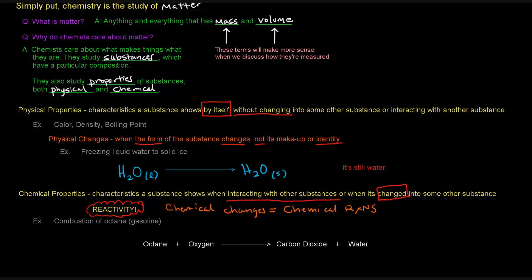But octane has a certain level of reactivity with oxygen. And if there's enough heat, it can cause this to basically explode and create carbon dioxide and water. And this is a reaction that releases energy, which is another thing that we'll talk about later. But the point is that we start off with octane and oxygen. And those things are changed into carbon dioxide and water. We no longer have octane and oxygen. So it's a chemical property of octane, the way it reacts with oxygen.